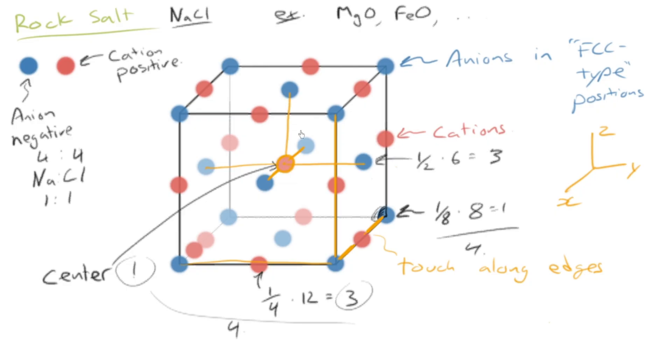it must also touch that way from the center. So now you can count the number of atoms that are touching any given cation, and we call that the coordination number.